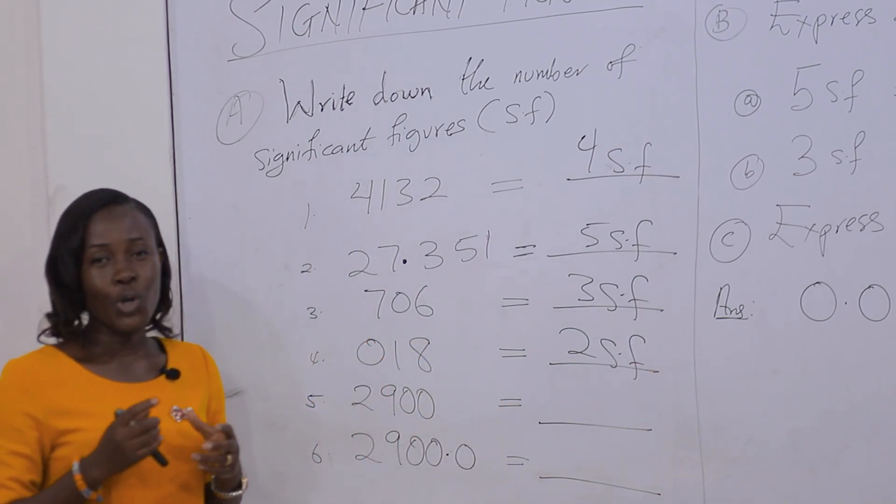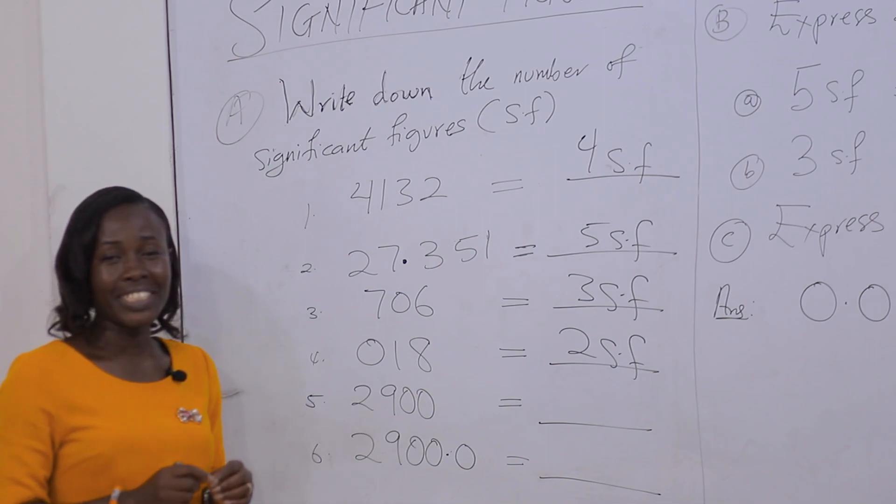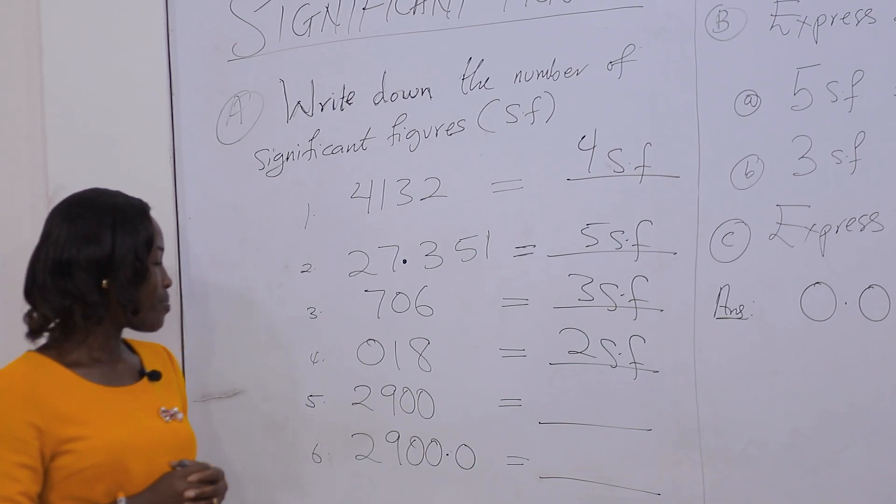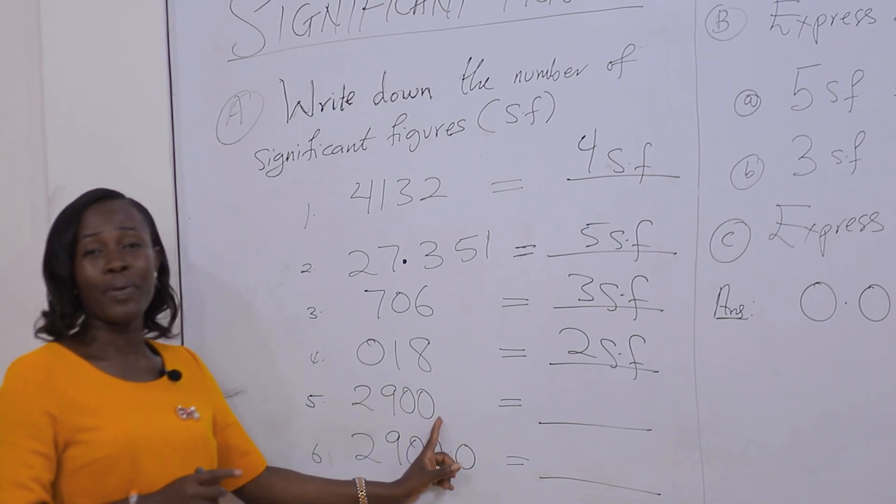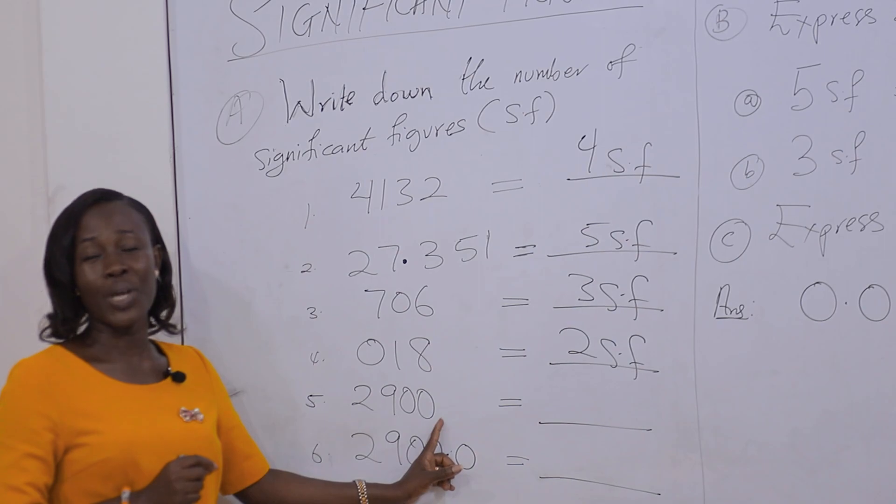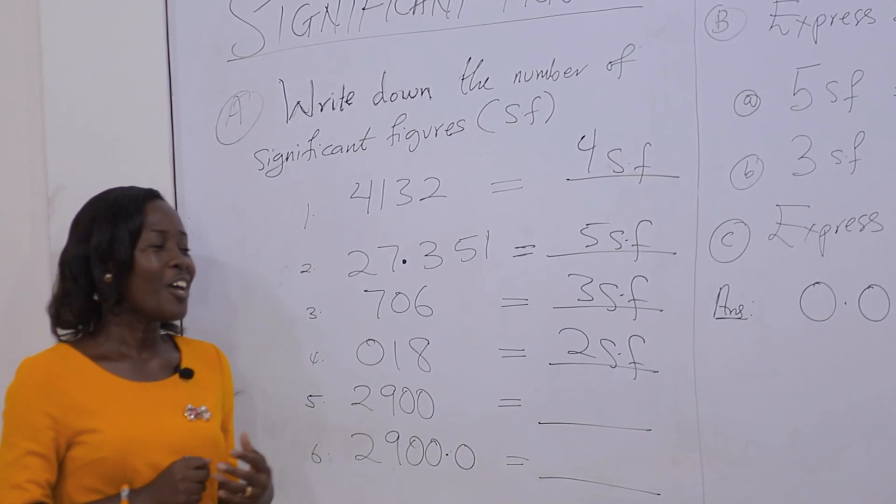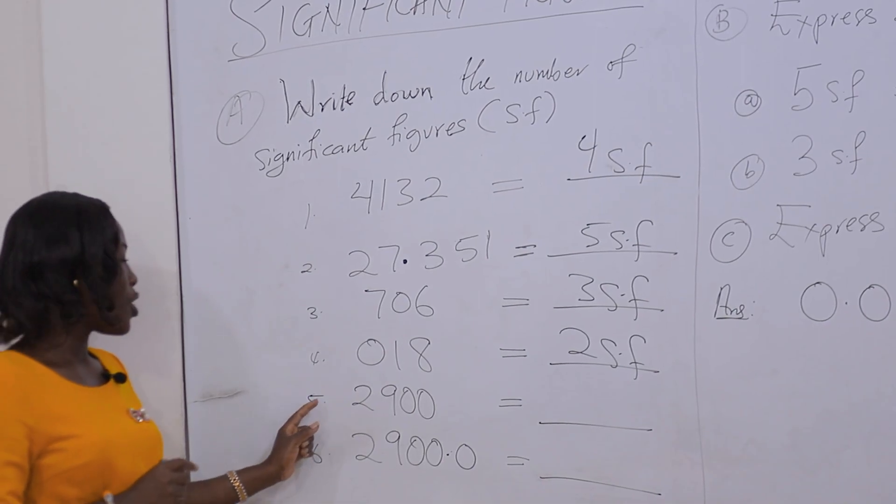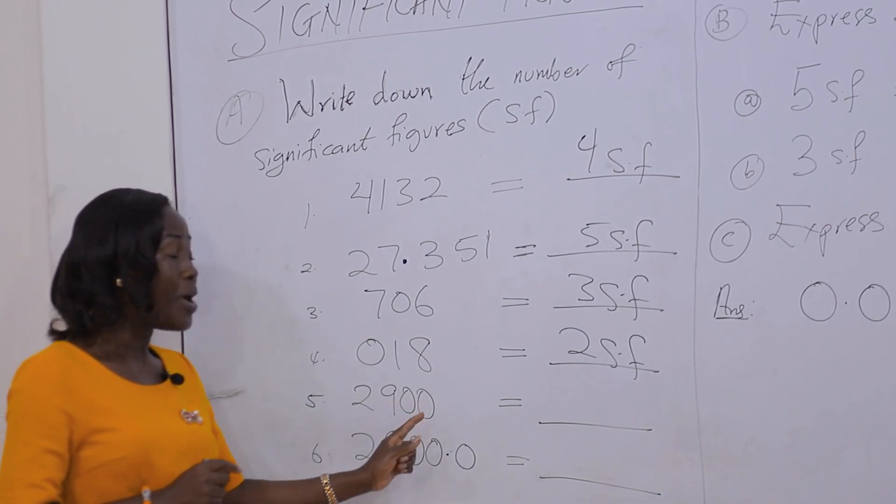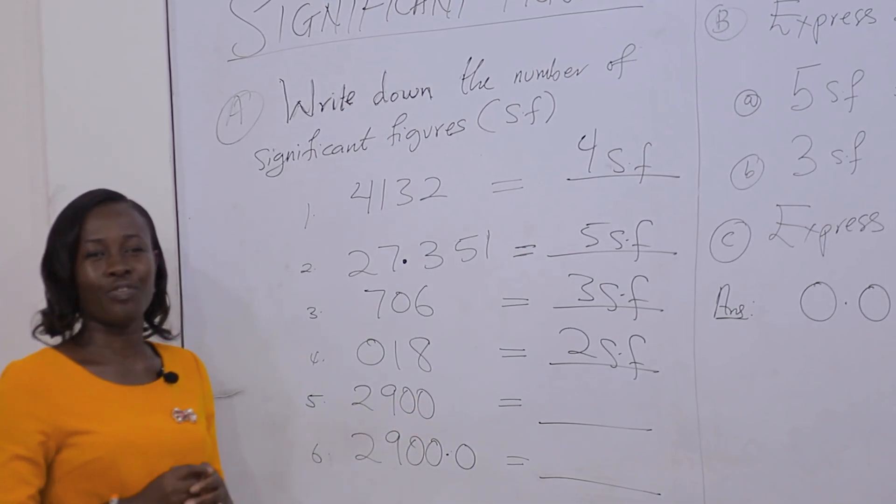Rule 4: Trailing zeros. Trailing zeros are zeros that are found at the end of a number. It's quite interesting. When there is no decimal place at the end of the trailing zeros, they are considered insignificant. So for example 5, 2900 has only 2 significant figures.